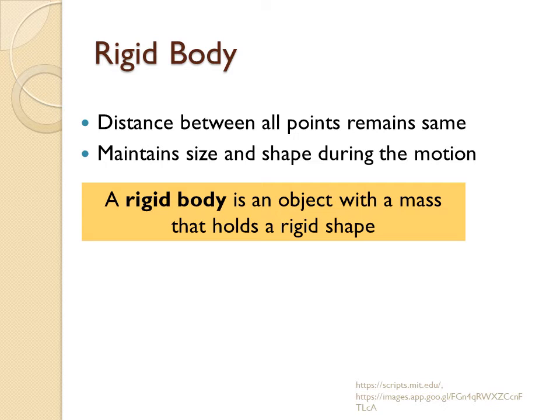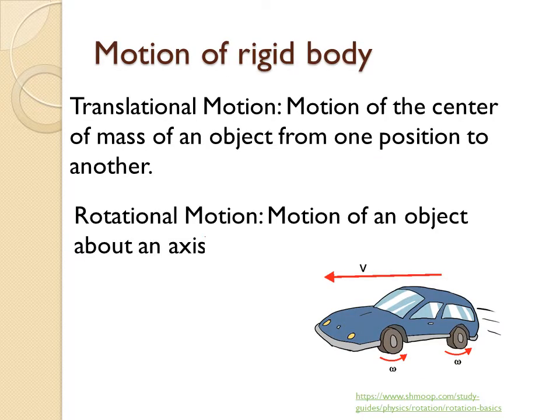What is a rigid body? A rigid body is defined as a solid body in which the particles are completely arranged such that the distance between two inter-particles is fixed. If we apply an external force, the distance does not change, which means the shape of the body remains the same. Such a body is called a rigid body — an object with a mass that holds a very strong rigid shape.